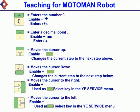Enters the number 0. Enable + Enter: enters a decimal point. Enable + Enter: moves the cursor up; Enable Plus changes the current step to the next step above. Moves the cursor to the right; Enable Plus used as the select key in the YES service menu. Moves the cursor to the left; Enable Plus used as the select key in the YES service menu.